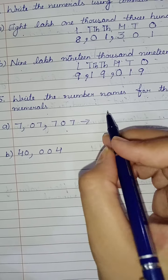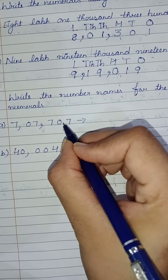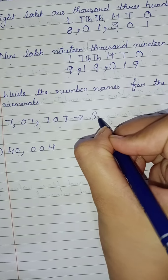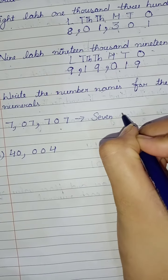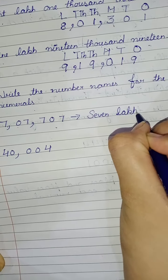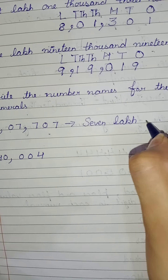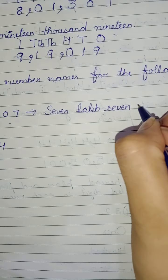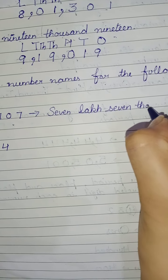Your last question is: Write the number names for the following numerals. How will you write? This is ones, tens, hundreds, thousands, ten thousands, lakhs. The lakhs family has seven, so we will write here seven lakh. Next, the thousands family also has 7, so seven thousand.